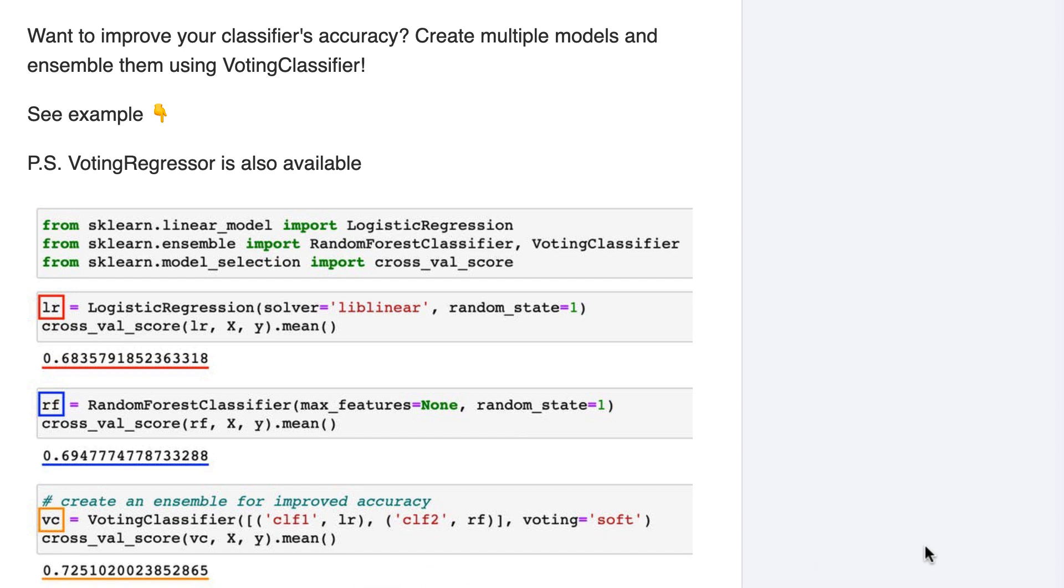So what is ensembling? Ensembling is the process of combining two or more models to produce a combined model, known as an ensemble, that is more accurate than any of the individual models.